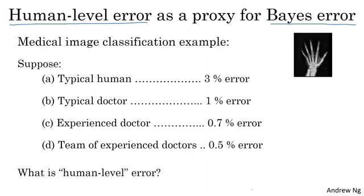Feel free to pause this video to think about it if you wish. And to answer that question, I would urge you to bear in mind that one of the most useful ways to think of human error is as a proxy or an estimate for Bayes error.